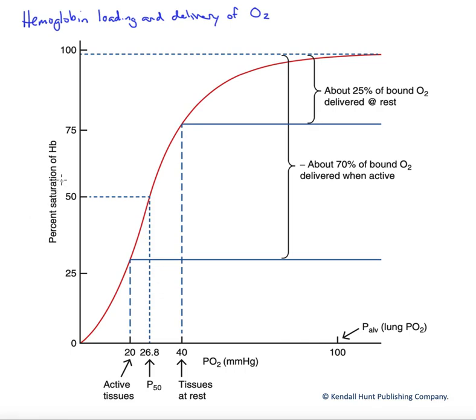So once again, we have our percent saturation over here on our y-axis, that's the degree to which hemoglobin is bound to oxygen. We have the partial pressures of oxygen down here on the bottom.